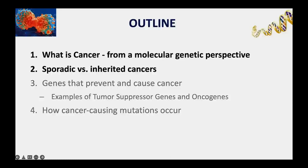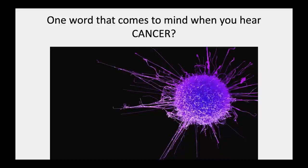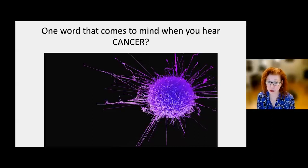We'll start with what cancer is and the difference between sporadic versus inherited cancer. I want you to think about one word that comes to mind when you hear the word 'cancer.' I see 'inevitable'—a very interesting word. Others say 'scary,' 'growth,' 'worst diagnosis,' 'death,' 'cellular chaos,' 'aggression,' 'adaptability,' 'sneaky,' 'metastasis,' 'death sentence.' Clearly there's a lot of fear around cancer.